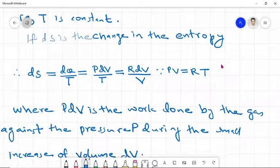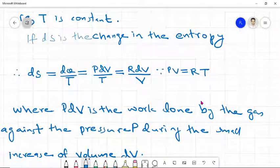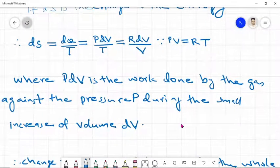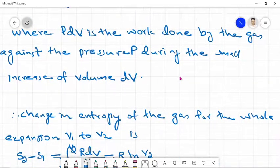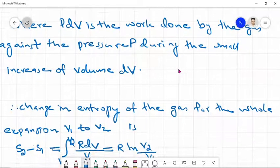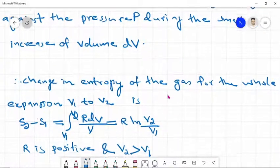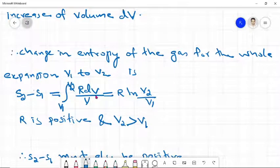PdV is the work done by the gas against the pressure P during the small increase of volume dV. Therefore change in entropy of the gas for the whole expansion V1 to V2 is S2 minus S1 equal to integral V1 to V2 of RdV by V, equal to R log V2 by V1. Here R is a positive quantity and V2 is greater than V1.